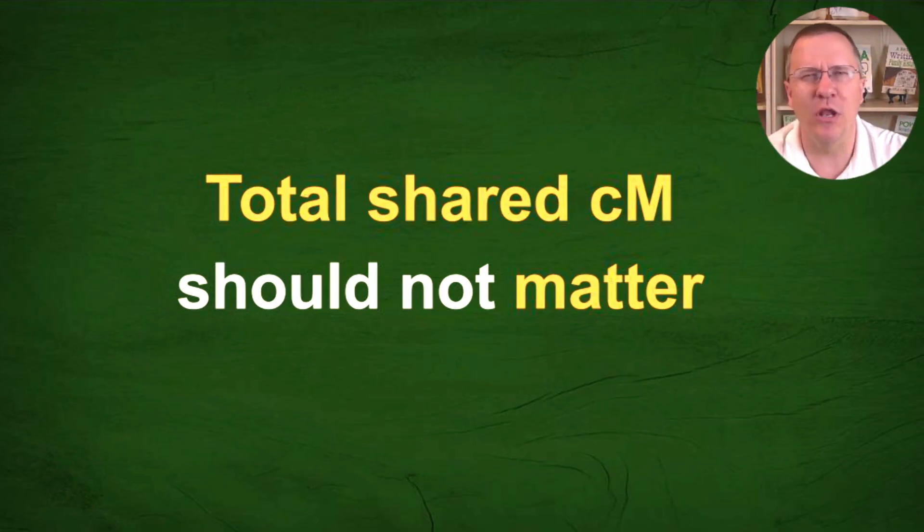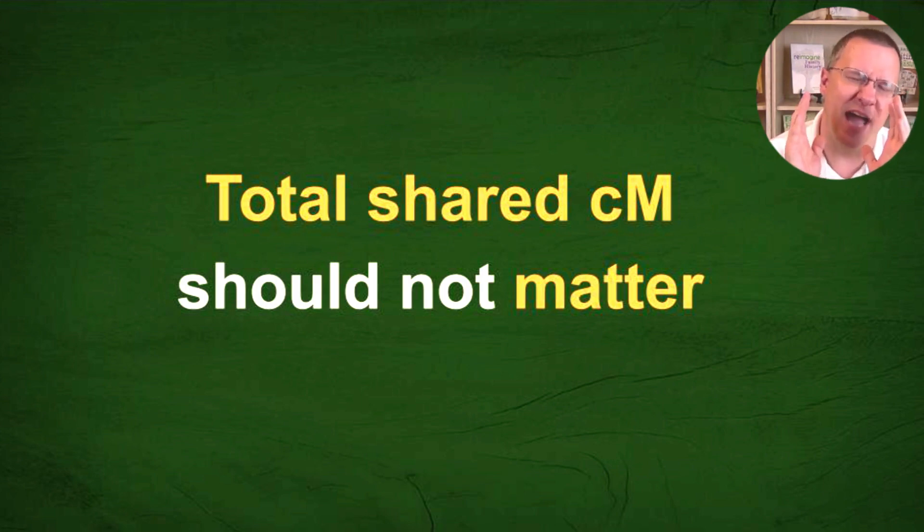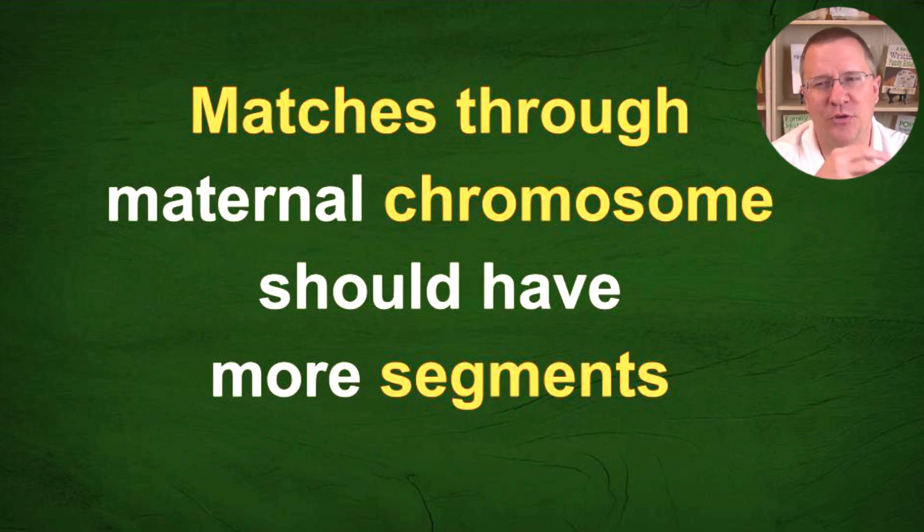First off, the total amount of shared centimorgans should not matter, because even though my cousin's chromosomes are going to be more segmented than my chromosomes and my brother's chromosomes, the amount of DNA shared, on average, should still be the same. So we shouldn't see a difference with that. The matches through the maternal chromosomes, in other words the matches with my cousin, they should have more segments because his is going to be more segmented. Even though the total number of chromosomes is the same, they should have more segments.